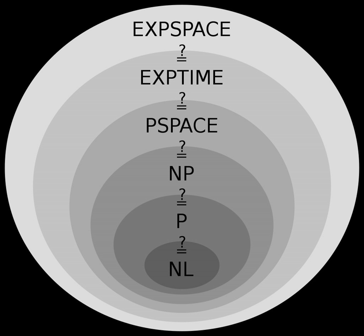PSPACE-completeness: A language B is PSPACE-complete if it is in PSPACE and it is PSPACE-hard, which means for all A element of PSPACE, A ≤_P B, where A ≤_P B means that there is a polynomial-time many-one reduction from A to B.